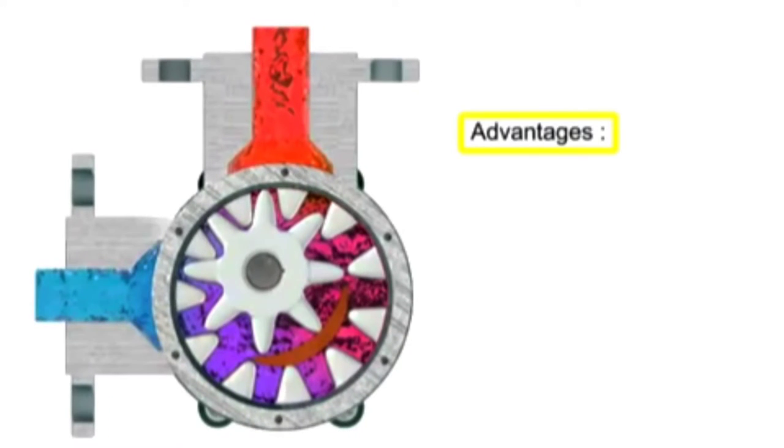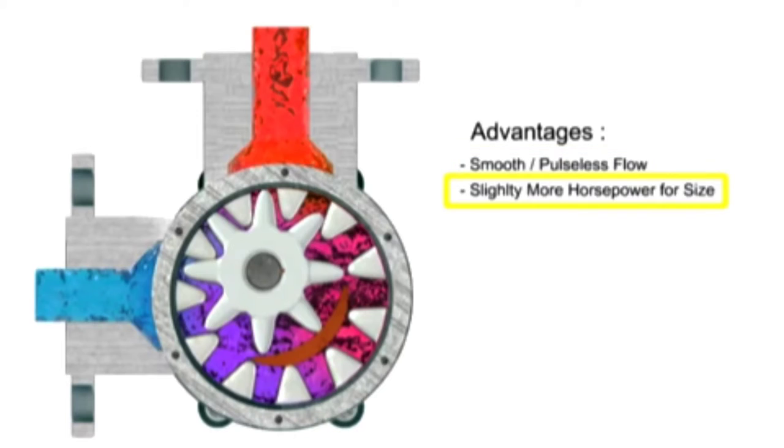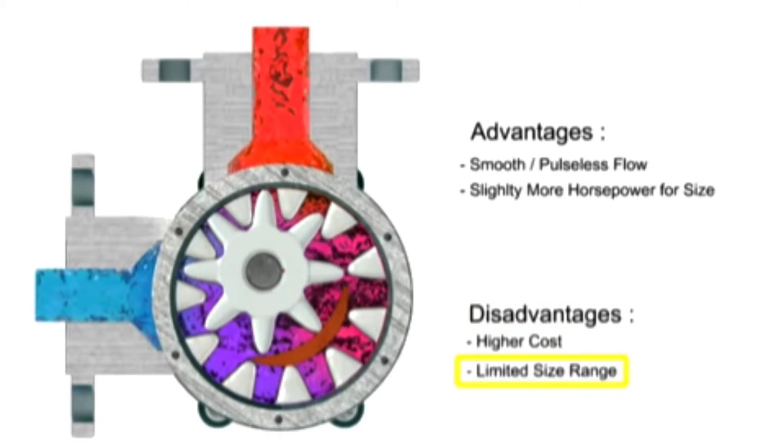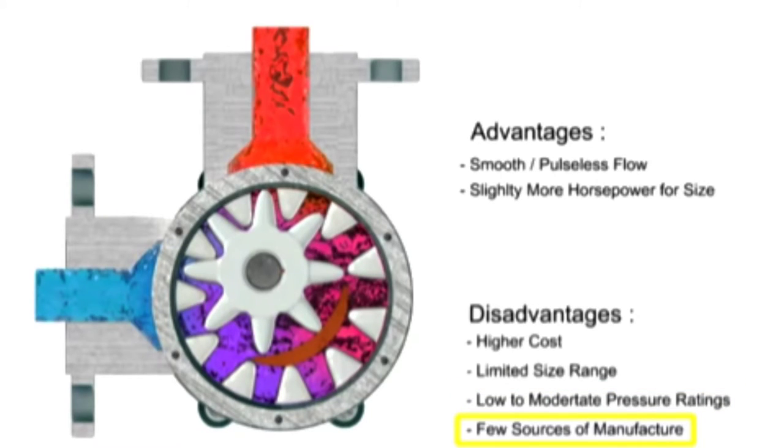Advantages of internal gear pumps are a smooth and almost pulseless flow and slightly more horsepower for its size. Disadvantages are its higher cost, limited size range, low to moderate pressure ratings, and few sources of manufacture.